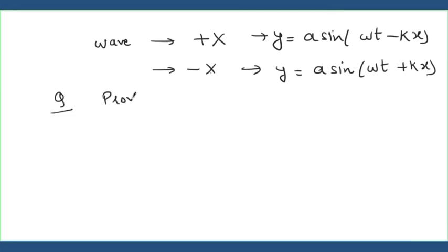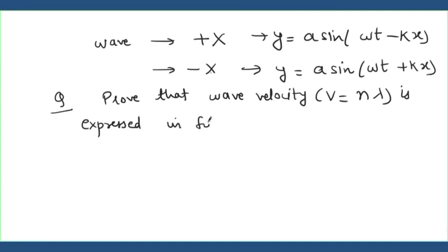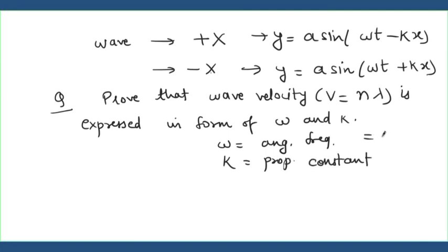Prove that wave velocity, whose formula you revised in sound waves as n lambda, is expressed in form of omega and k, where omega is the angular frequency and k is the propagation constant. The value of omega is 2 pi n or 2 pi by T, and k is 2 pi divided by lambda, that is the wavelength.